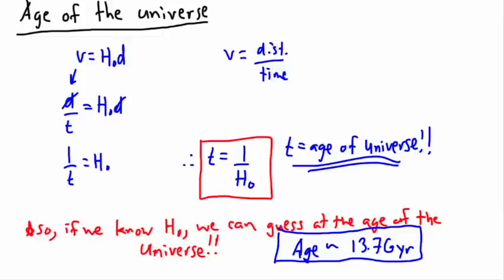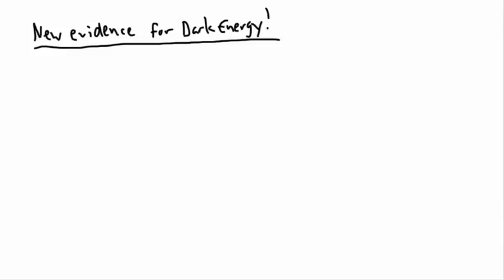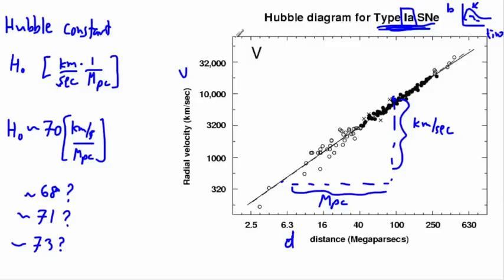We can do some really neat things with it. Last but certainly not least is new evidence for dark energy. Remember that same graph I was showing you, this graph of v versus d?